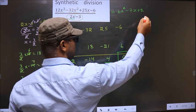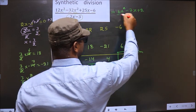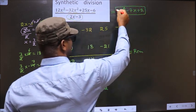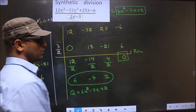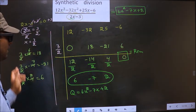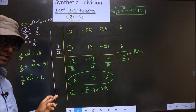Remainder, we got 0. So I am not writing that. So this is our answer. Am I clear?